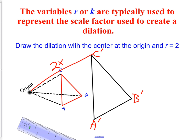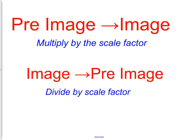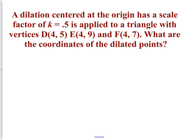Going from the image back to the pre-image: divide by the scale factor. For example, if the distance from A to C-prime is 10 centimeters and the scale factor is 2, we divide by 2 to get 5 centimeters for the pre-image. Multiply to go from the pre-image to the image; divide to go from the image back to the pre-image — a very important fact.